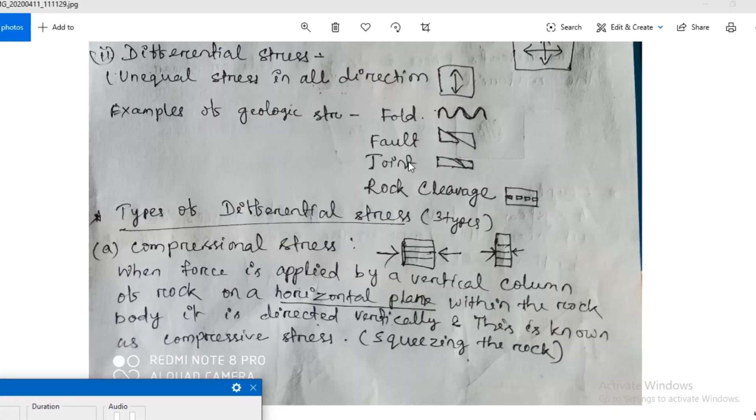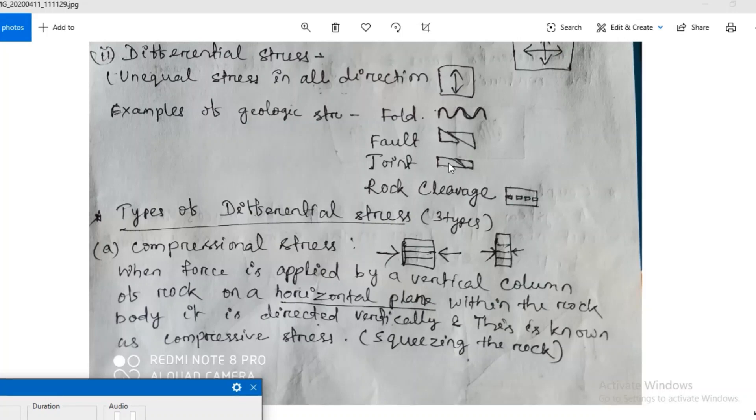Then comes the joint. Joint is the first stage of fault. If the broken part of a rock does not move, then it is called joint. The difference between fault and joint is, in fault, broken part of the rock moves, but in joint, broken part of a rock does not move.